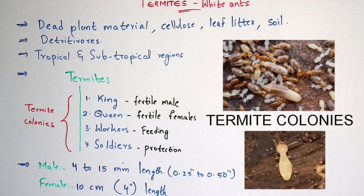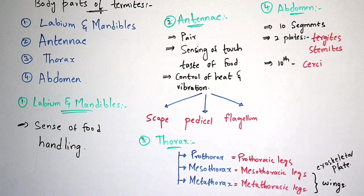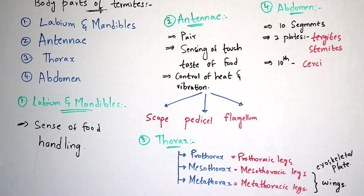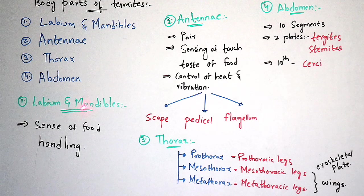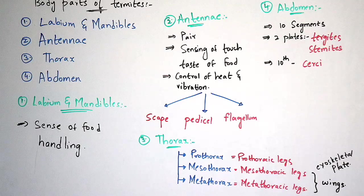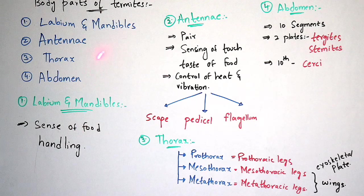Now let us discuss about the body parts of the termites. We will discuss important parts like labium and mandibles, antennae, thorax and abdomen. Coming to labium and mandibles: the main function is sensing of food and handling of food. Just as human hands play a major role in handling food, the labium and mandibles in termites play a major role in handling and sensing food. These are present at the mouth part region of the termites.